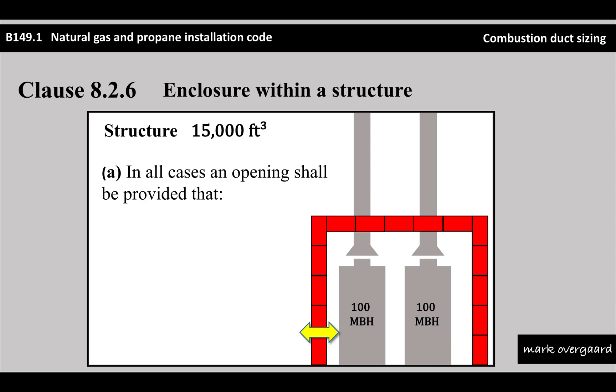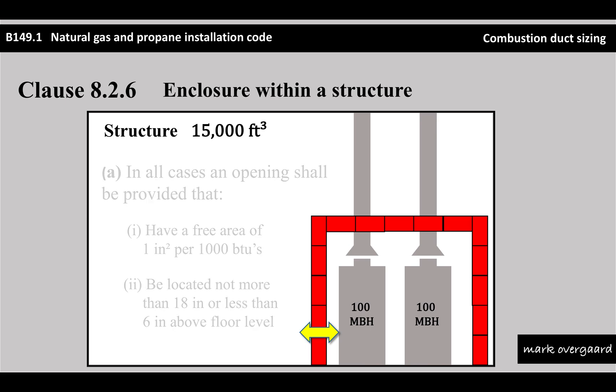The opening shall be one square inch per thousand BTUs. So for every 1,000 BTUs you have inside that enclosure, you need one square inch of combustion-free area opening. And that opening has to be located not more than 18 inches or less than 6 inches above floor level - near the floor, basically.